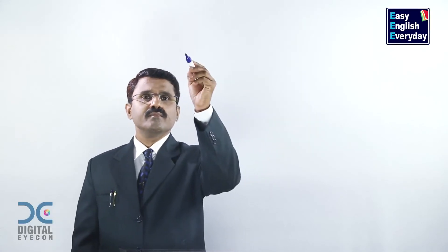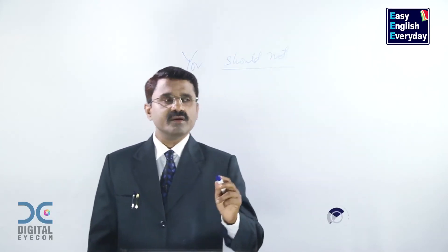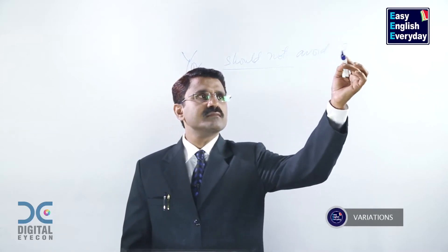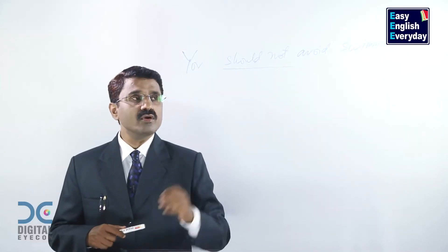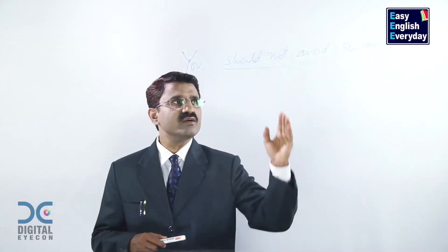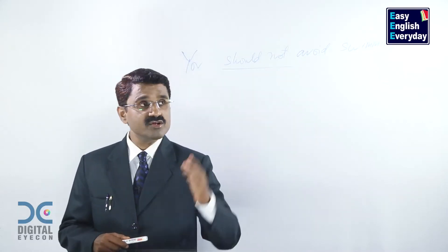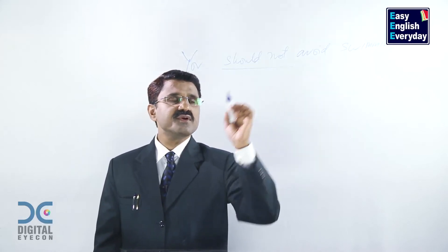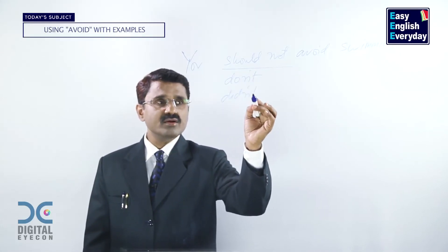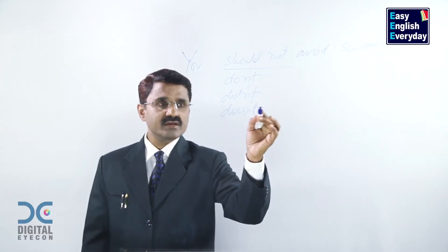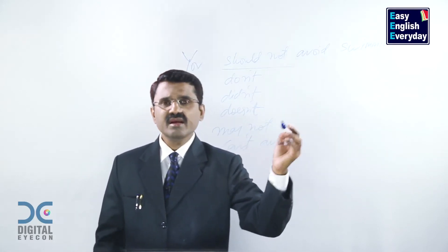Now look at these negative form examples. 'You should not' — this is the negative verb. You should not avoid swimming. In this example we are telling him not to stop, not to discontinue swimming. In spite of bad weather, in spite of rain, you should not avoid swimming because you are going to participate in the competitions. In the same category: you don't avoid, he did not avoid, she doesn't avoid, he may not avoid, he can't avoid smoking.